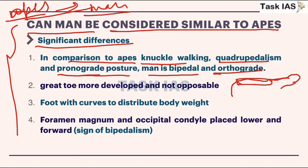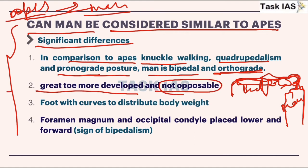Orthograde posture is a standing upright posture — you can imagine this is a man standing upright and this is a monkey with a horizontal posture. In the case of man, the great toe is more developed and not opposable. But in case of apes the great toe is opposable. Prosimians also lack an opposable toe. Looking at this evolutionary pattern: earlier the opposable toe was absent, later in apes it was present, and then in humans it is absent again.